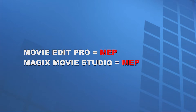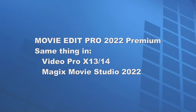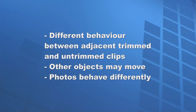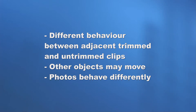I'll refer to both Movie Edit Pro and its new name, Movie Studio, as MAP. I'm using MAP 2022 Premium, and everything shown here also applies to Video Pro X and Movie Studio 2022. There are some side effects to watch out for: you get a different result depending on adjacent trimmed or untrimmed clips, objects on other tracks might move, and photos behave slightly differently. We'll see these as we go along.